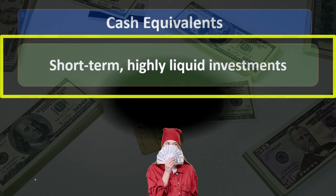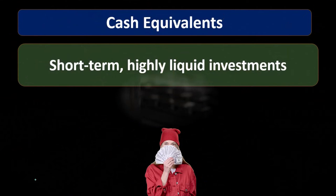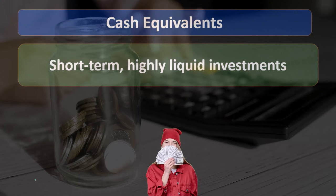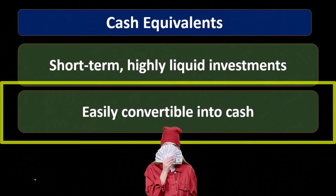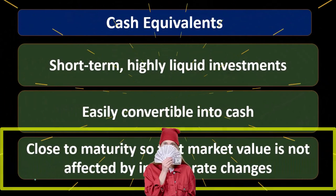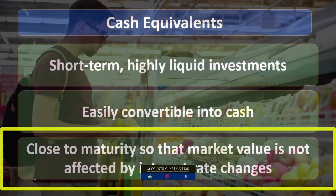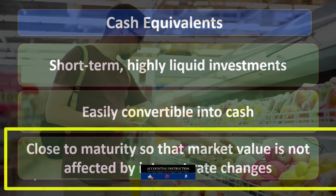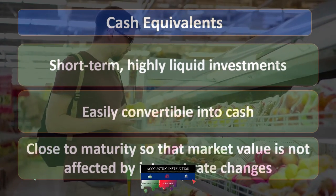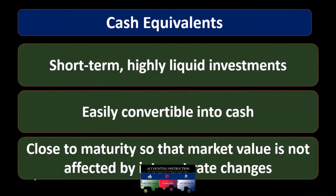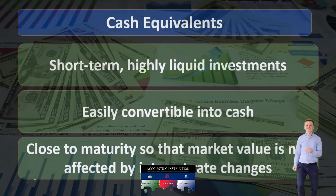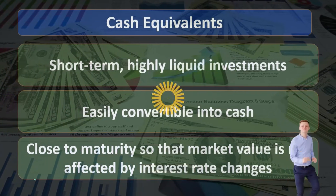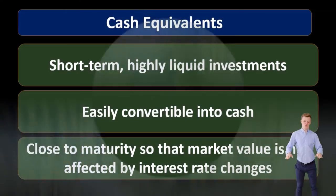Cash equivalents include short-term, highly liquid investments — things that can be converted into cash very quickly. They are easily convertible into cash and close to maturity, so that the market value is not affected by interest rate changes. If something is really close to maturity, we say it's pretty close to cash, and therefore we're going to include it in cash on the balance sheet and use it within the statement of cash flows to look at the change in cash.